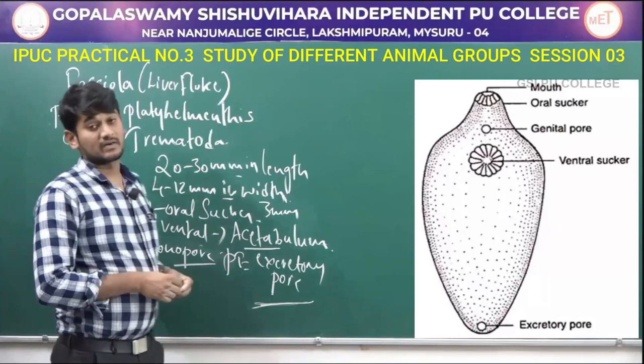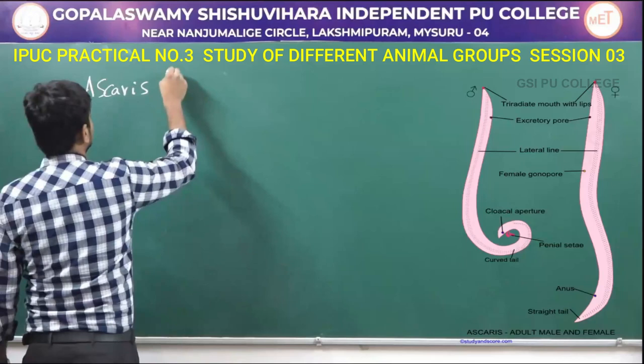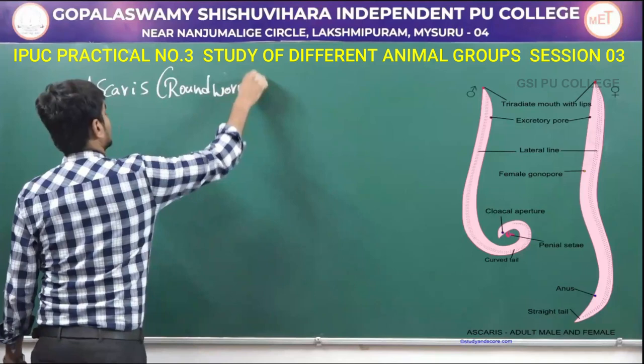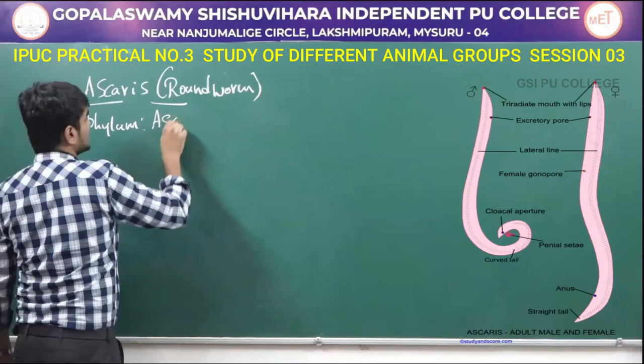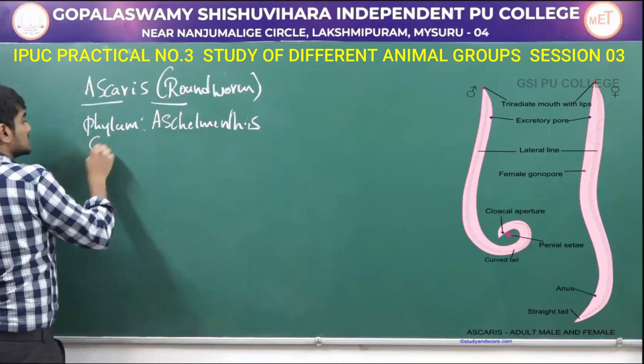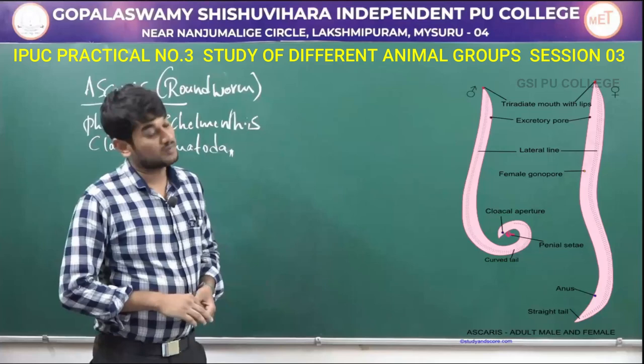The next one is Ascaris, commonly called as roundworm. It comes under the phylum Aschelminthes and class Nematoda. In the right side we can observe the picture of Ascaris, commonly called as roundworm.